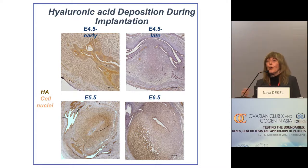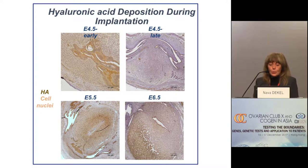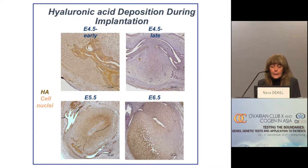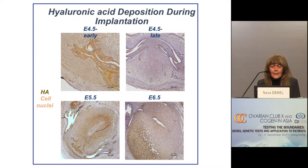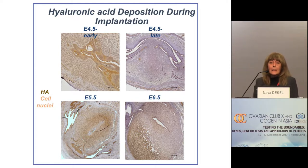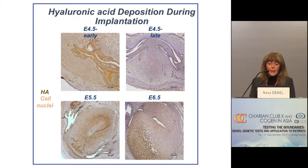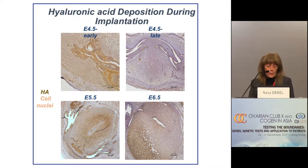Our first experiments were directed at determining whether hyaluronic acid is deposited during implantation in the mouse uterus. This dark dye represents hyaluronic acid. At the early stages of implantation, hyaluronic acid is intensively deposited in the embryo and around it. This is followed by clearance of hyaluronic acid, which is then followed by reapposition of hyaluronic acid at later post-implantation stages.